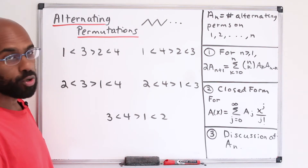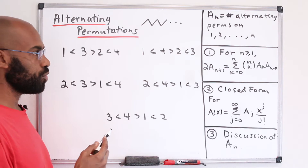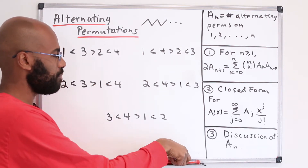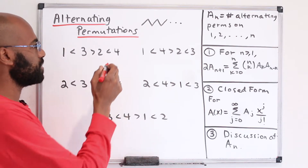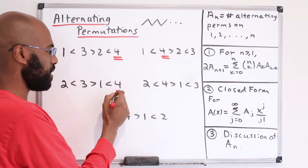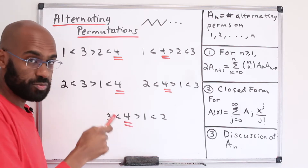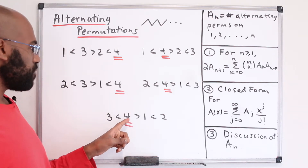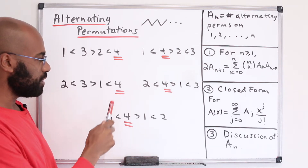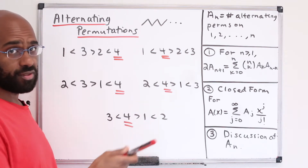A typical way to approach a problem like this is to decompose the permutations into pieces. What we can do is look at where the largest number appears in an alternating sequence. Now notice, because the number 4 has to be larger than the numbers beside it, the number 4 doesn't appear in just any spot. In an alternating permutation, 4, which is the largest number, can't appear in the third position because it's not less than any of the numbers in the list.